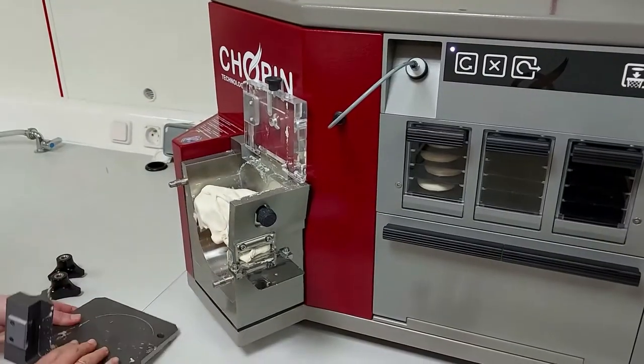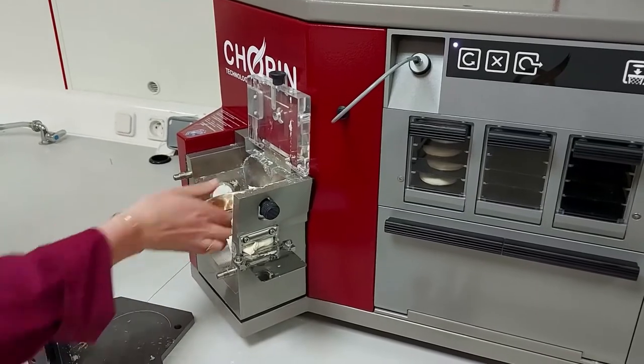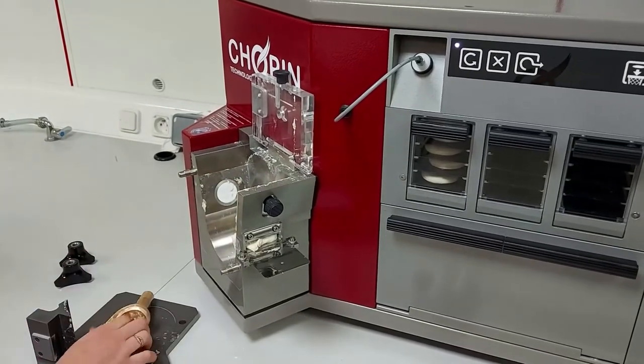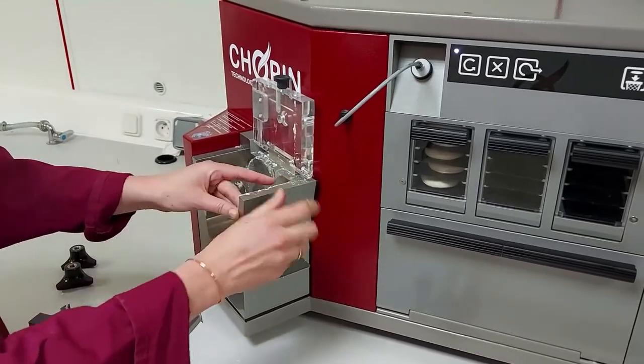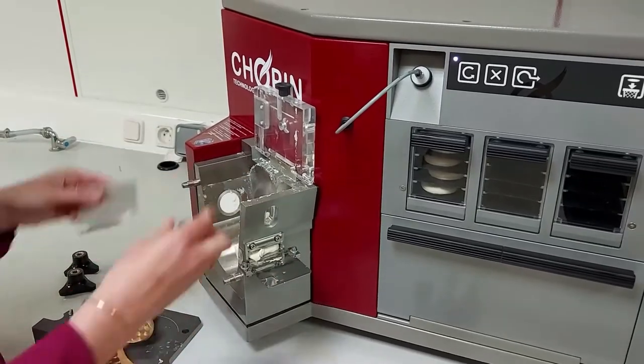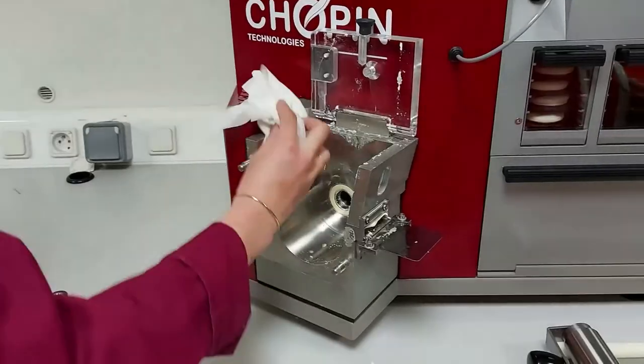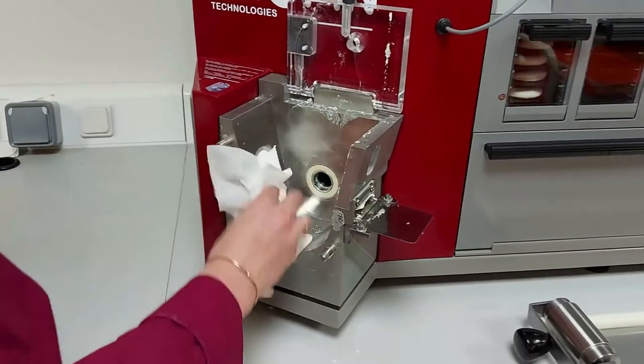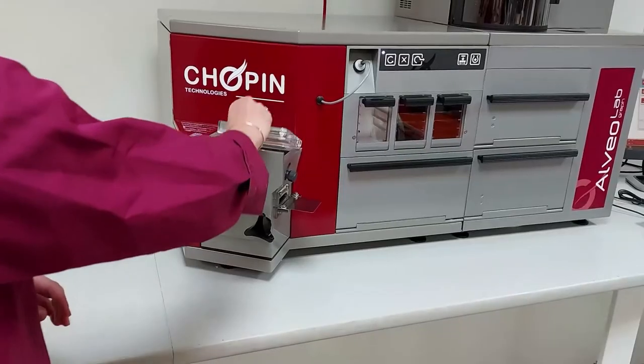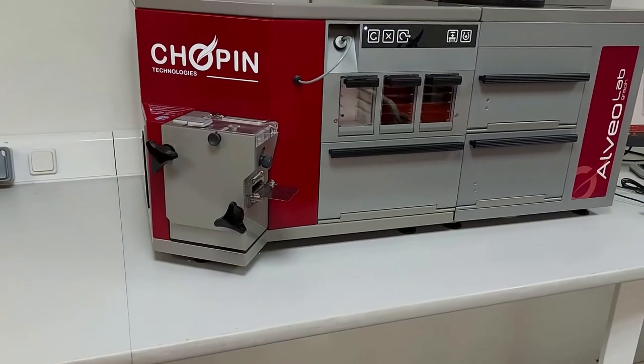You can take benefit of resting time to clean the kneader. Remove the flange, the remaining dough, the blade, and the F-register. Immerse them into water and clean them carefully. Use a damp cloth to clean the mixing bowl. Once the mixer is clean and dry, you can start another test even if the first test is still ongoing.